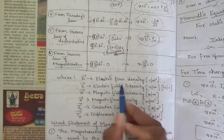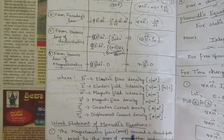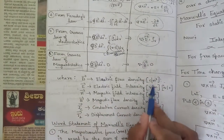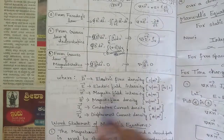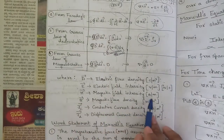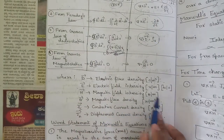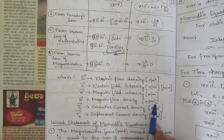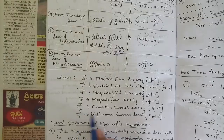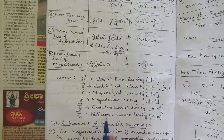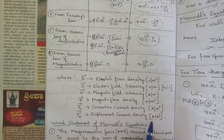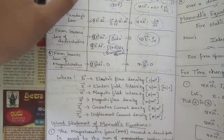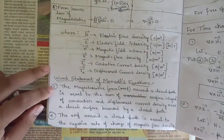Now for the quantities and units: D is electric flux density in C/m²; E is electric field intensity in V/m or N/C; H is magnetic field intensity in A/m; B is magnetic flux density in Wb/m²; Jc is conduction current density in A/m²; and Jd is displacement current density, also in A/m².